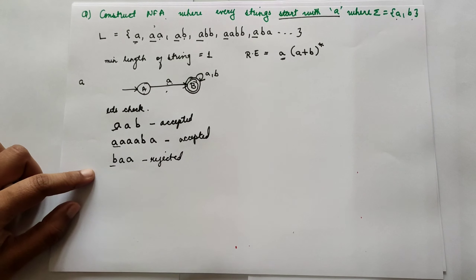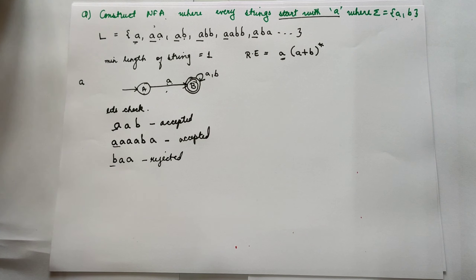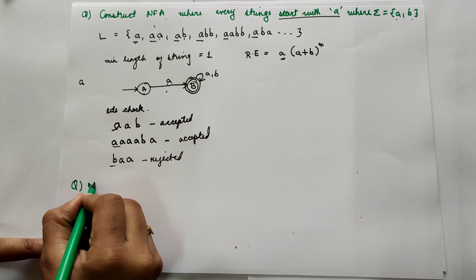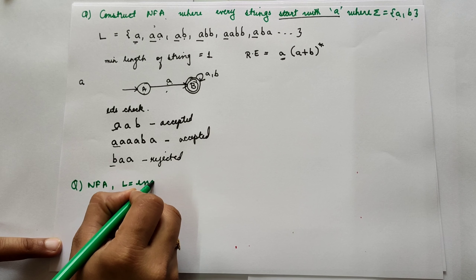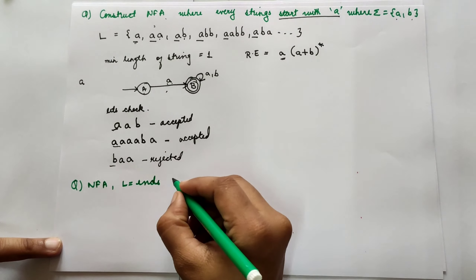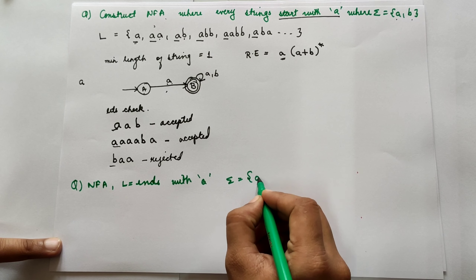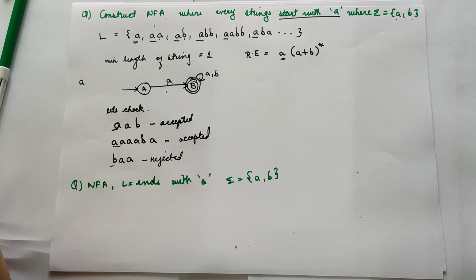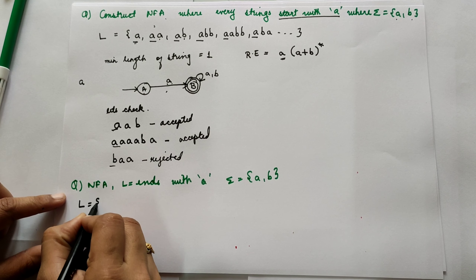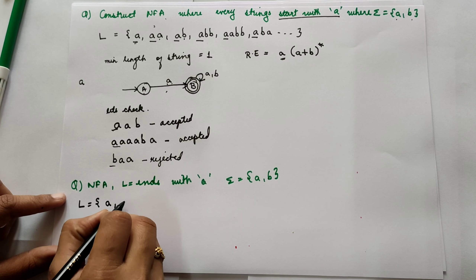So we can draw the NFA for strings starting with A. Let's take one more example where we have to construct an NFA for strings that end with an A. What would be the possible languages or strings? The minimum string is just A; it can also be AA, BA, ABA, BBA — the string must end with A.